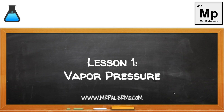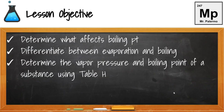Welcome to lesson one on vapor pressure. Our lesson objectives: determine what affects boiling point, differentiate between evaporation and boiling, and determine the vapor pressure and boiling point of a substance using table H in our reference table.